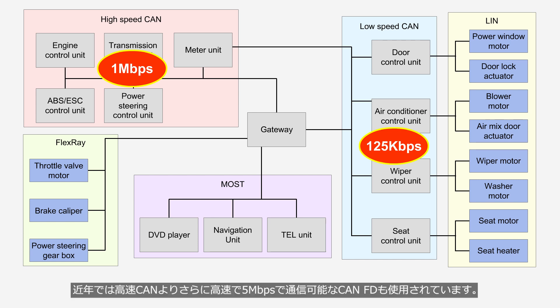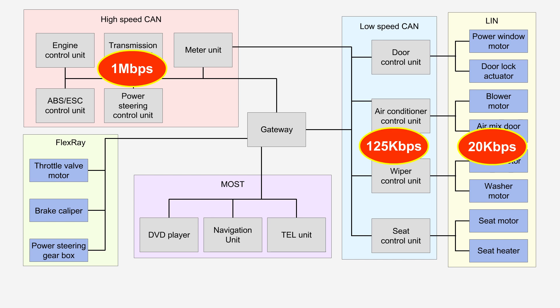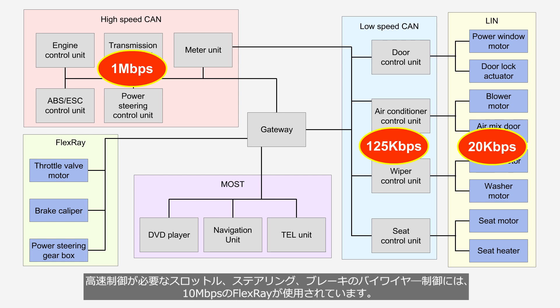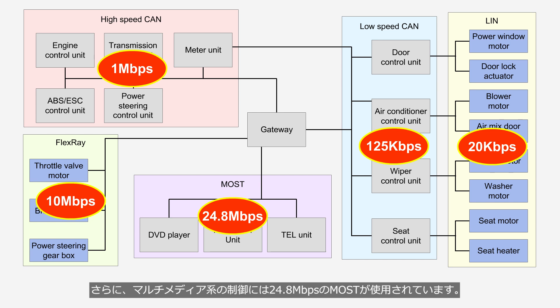In recent years, CAN FD, capable of communication at an even higher speed of 5 Mbps than high-speed CAN, is also being utilized. For communication between switches, actuators, and control units where high communication speed is not necessary, a 20 Kbps Local Interconnect Network (LIN) is employed. For throttle, steering, and brake-by-wire control systems that require high-speed control, FlexRay with a speed of 10 Mbps is employed. Additionally, for multimedia control systems, MOST with a speed of 24.8 Mbps is employed.